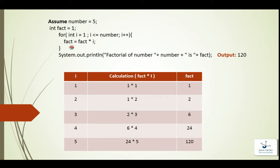Same way, when i will become 5, that time fact will be 24, having 24. So 24 multiplied by 5 will become 120.